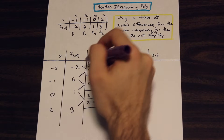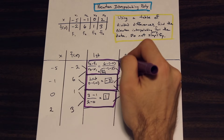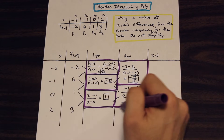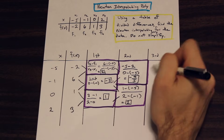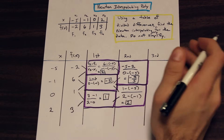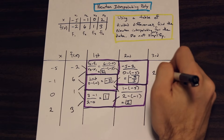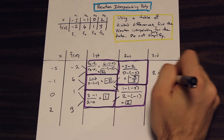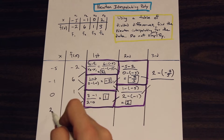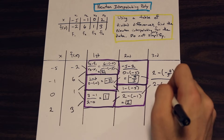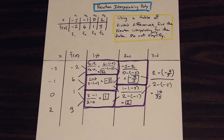We only have two terms left, so there's just one entry in the third column to complete the table. The numerator is 2 minus (negative 7/5). For the denominator, follow the lines all the way down to 2, then all the way up to negative 5, giving 2 minus (negative 5). That equals 17 over 35.